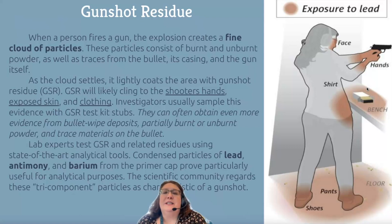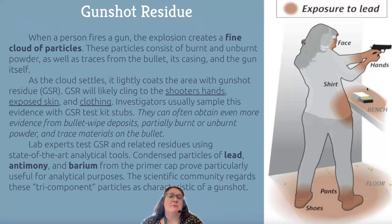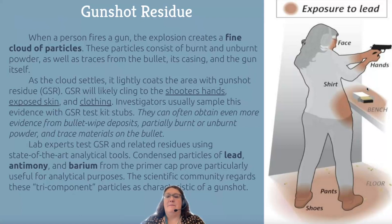Gunshot residue is essentially a whole bunch of burnt and unburnt powder. Its pieces are very tiny flakes of metal from the bullet, from the casing, and maybe even from the barrel of the gun itself. As the cloud settles it coats all these areas, so primarily you'd be looking at hands, any exposed skin, or clothing that the person might have been wearing. You would sample these with a GSR kit, and different manufacturers make different kinds of kits.